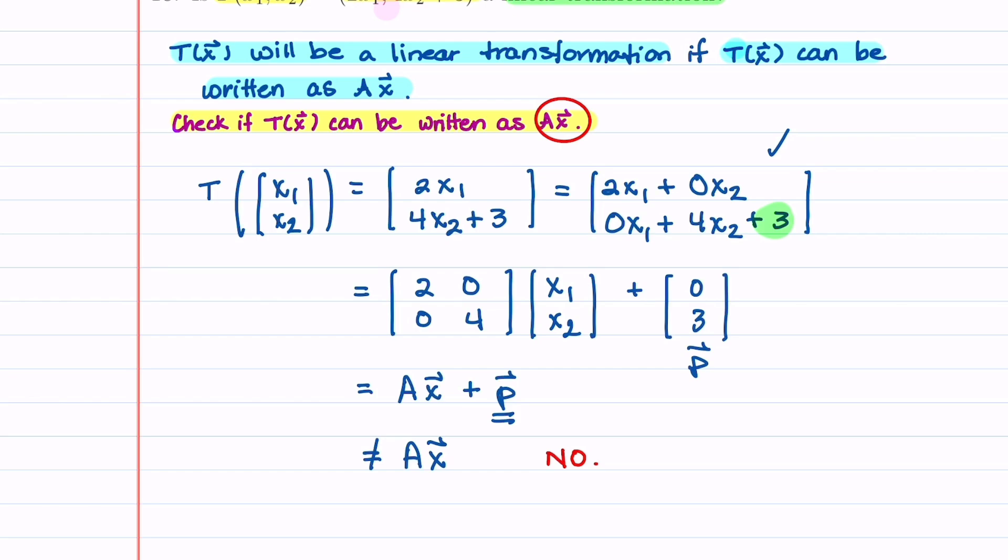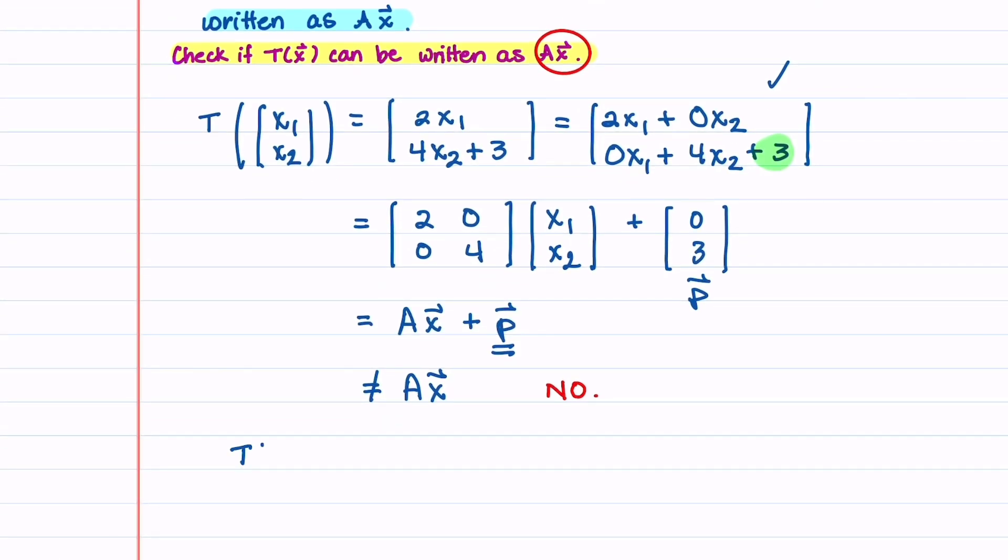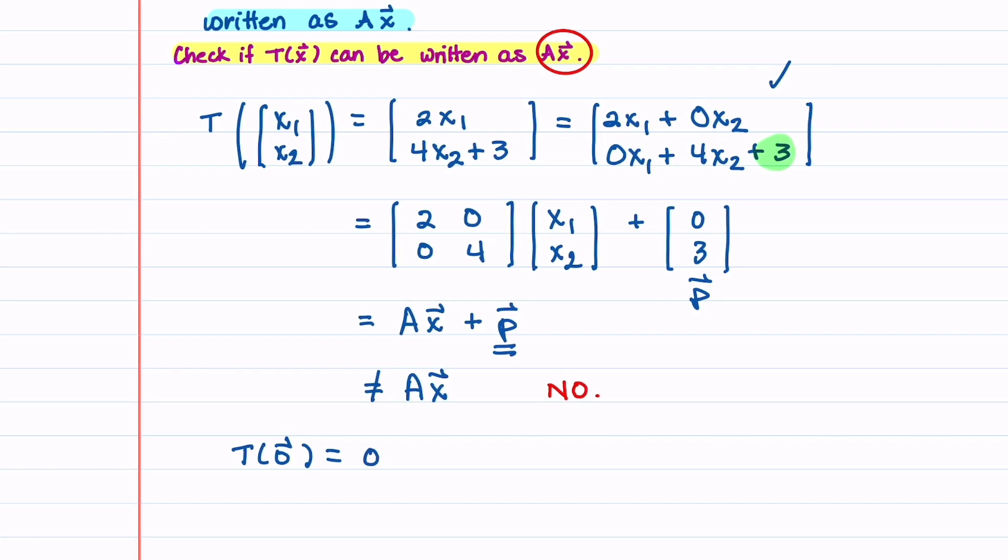The other thing that we could have looked at is what T of 0 is. If a transformation is linear the idea is that the origin remains fixed so T of 0 should be equal to 0. When we come up here and if we were to plug in that x₁ and x₂ was equal to 0, you can see that T of 0 is equal to 0, 3 and it's not equal to 0. So the idea is that the origin does not remain fixed which means that this is not a linear transformation.